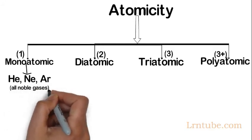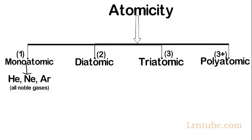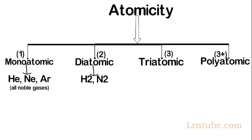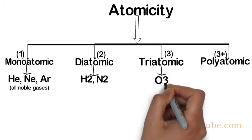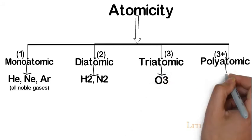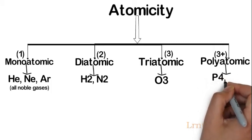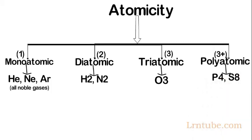Diatomic examples are hydrogen and nitrogen. Triatomic examples are ozone. Polyatomic examples are phosphorus and sulfur.